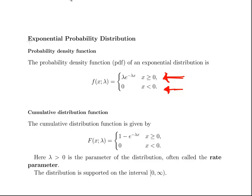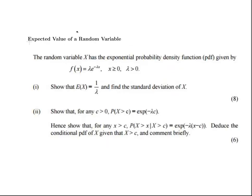The cumulative distribution function I'm going to leave for another presentation. So this is the question and I'm only going to look at part of it. The random variable x has an exponential probability density function given by this here — the same PDF, x greater or equal to zero, lambda greater than zero. It's just the main case only; the trivial case is left out. Show that the expected value of x is 1 over lambda and find the standard deviation of x. I'm only going to concentrate on finding the expected value of x in this presentation. We'll move on to the standard deviation in the next presentation.